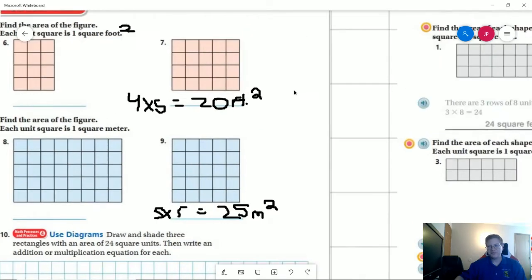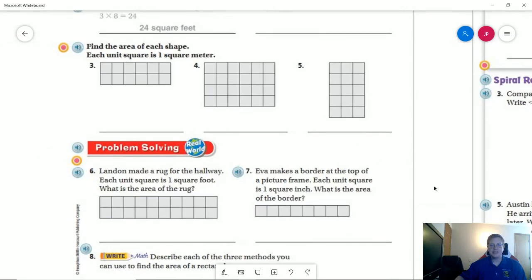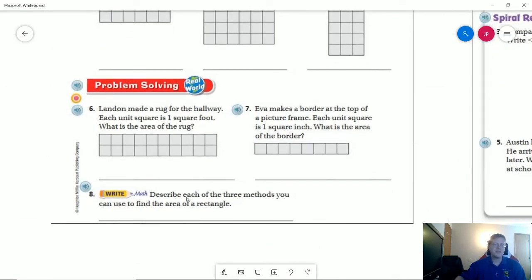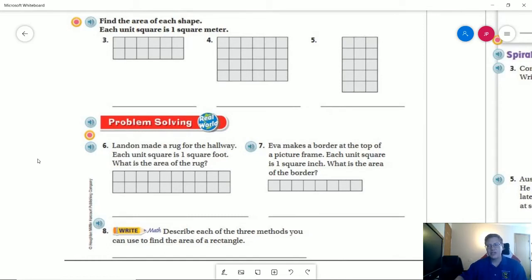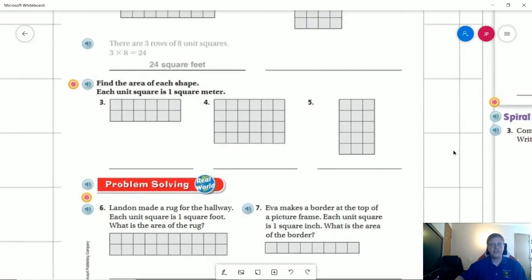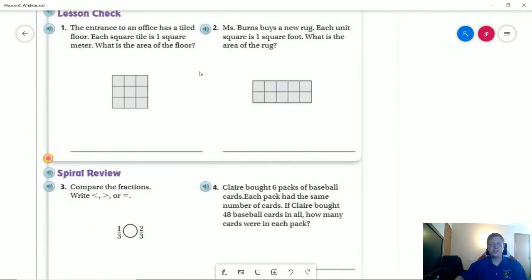So for the homework, which will be in a separate video, number eight, which is down at the bottom, the way I capture the screen, this part's cut off, but I will leave a thing in the Google form where you can type in your answers. So all three methods are what we talked about at the very beginning of the lesson. That was counting each individual square, using repeated addition, or using multiplication facts. So those are our three ways that we could do that. Everything else, you're doing two, four, six, and one and two on the back.